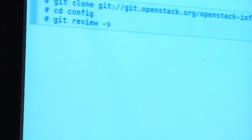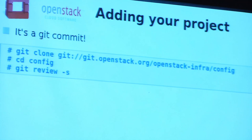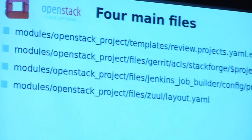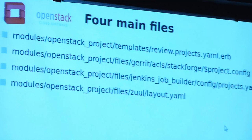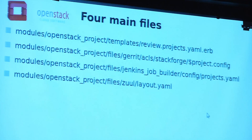You get access to all of this advanced stuff that we're doing here. It's really easy to add your project — it's a git commit. You clone the OpenStack infrastructure config repo at git.openstack.org/openstack-infra/config. Then it's always a good idea to first run 'git review -s' in the directory, because that will set up your Gerrit remotes and install some post-commit hooks for you. There are four files you will have to edit in that repo to add your project to StackForge — that's it. They're all YAML: three YAML files and an ini file.